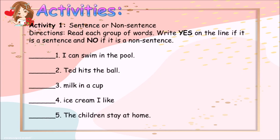Our first activity is called 'Sentence or Not Sentence.' Read each group of words and then write yes on the line if it is a sentence, and no if it is a non-sentence. 1. I can swim in the pool. 2. Ted hits the ball. 3. Milk in a cup. 4. Ice cream I like. 5. The children stay at home.